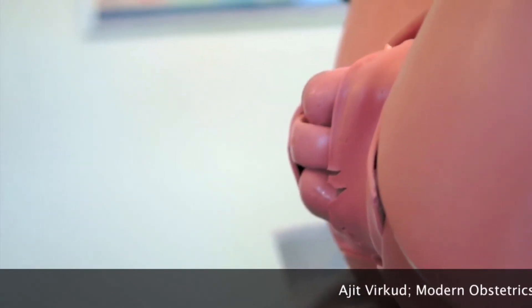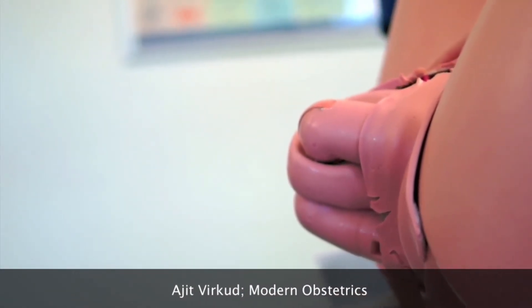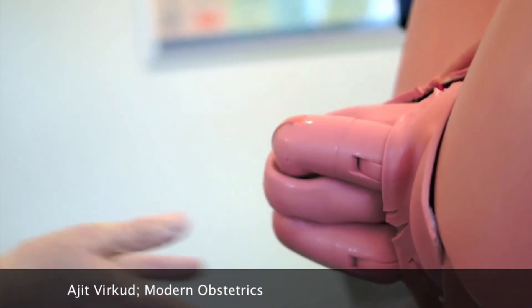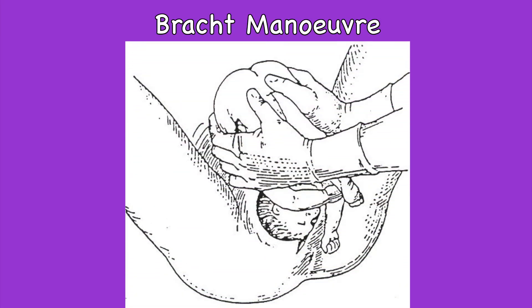I will now illustrate the technical minutiae of the Braak Manoeuvre. The Frank Breech is allowed to deliver spontaneously up to the umbilicus without any push or pull. The knee-extended legs of the frank breech are not brought down. The fetal trunk and extended legs are then grasped in both hands with the fingers around the lower back and the thumbs around the posterior aspect of the thighs, as shown in the figure here.